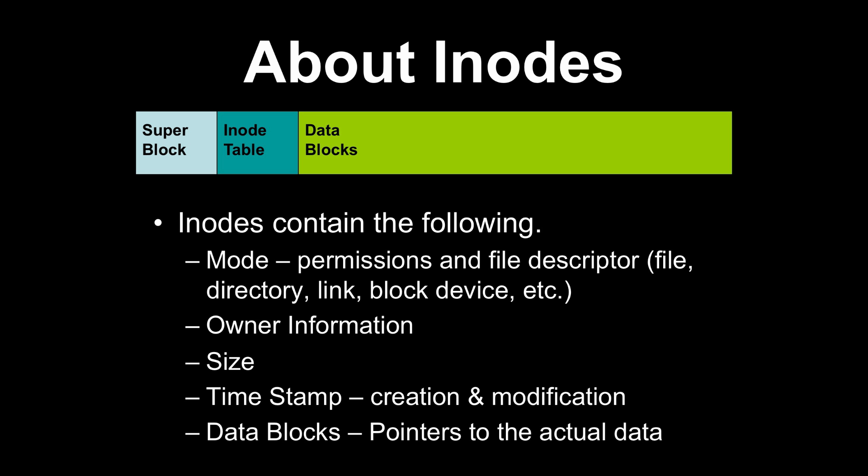Let's start thinking about how your hard drive is organized and talk about a concept called inodes. On a Unix system, you can think of there being three distinct areas on that hard drive. One of those areas is called the Superblock. The Superblock contains information about the type of the file system, its size, and some other information about the status of the file system.